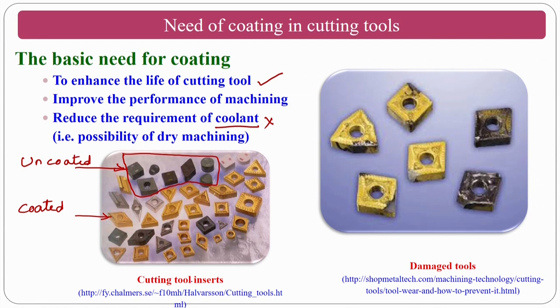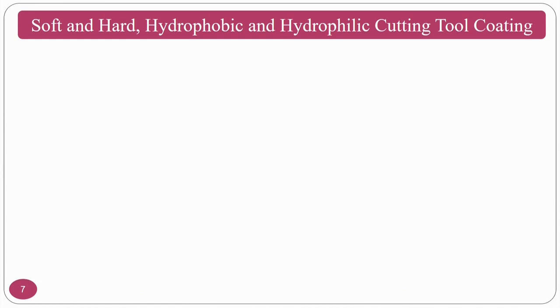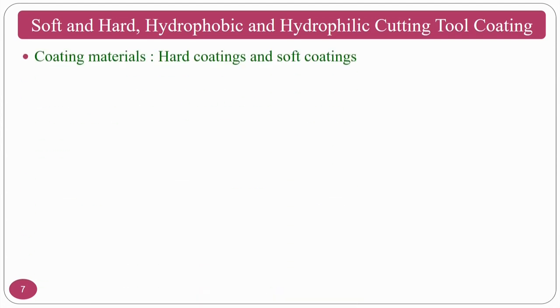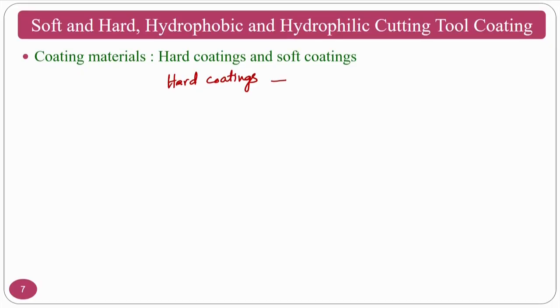These are cutting tool inserts — coated, uncoated, and diamond — and you can see how damage occurs. In order to minimize this damage, one option is tool coatings. There are varieties of tool coatings: the first distinction is soft versus hard coatings. Depending on your application, most coatings that people use are hard coatings, to increase hardness and resistance to penetration.